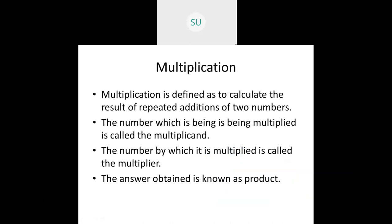The number which is being multiplied is called the multiplicand, and the number with which it is multiplied is called the multiplier. The answer obtained is known as the product — so the answer you get when you multiply two numbers is called the product.